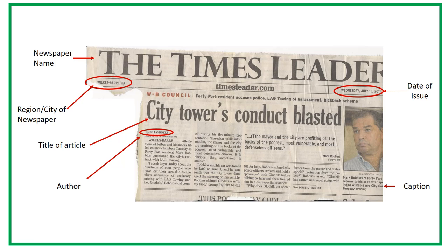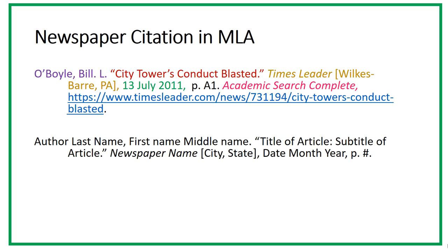Newspaper article citations are very similar to magazine article citations. Again, identify the citation elements, including the city of publication. Begin the citation with the author. The article title is in quotation marks, and all the major words are capitalized. The name of the newspaper is in italics. Usually the name of the city is included in the newspaper name, but if it isn't, put the city and state in square brackets, and then put the date, month, and year of the article. Don't include the volume and issue number for newspaper articles — just the page number is needed. Again, if the article is from an online database, put the database name in italics with the URL for the article at the end of the citation, and close it with a period.